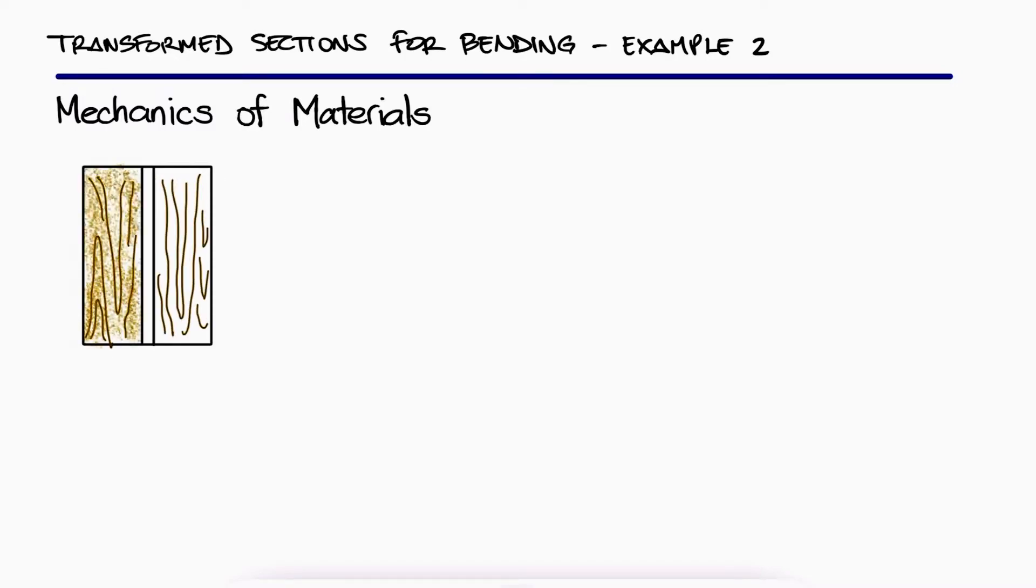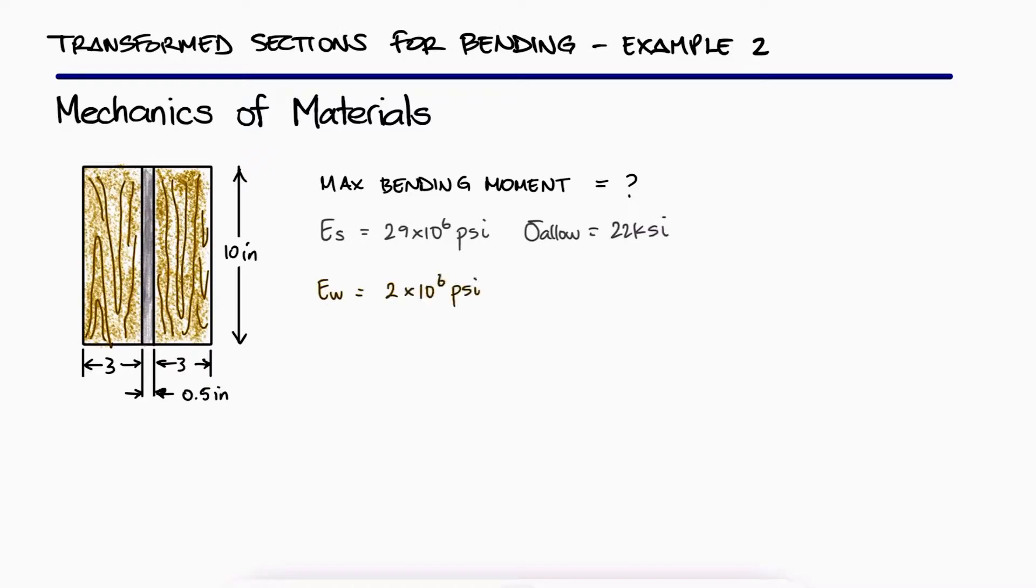Wooden beams and steel plates are securely bolted together to form the composite member shown. What is the largest permissible bending moment when the member is bent about the horizontal axis?